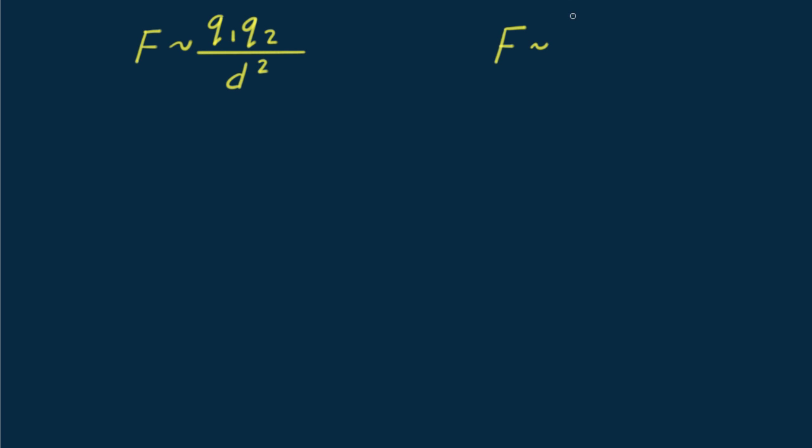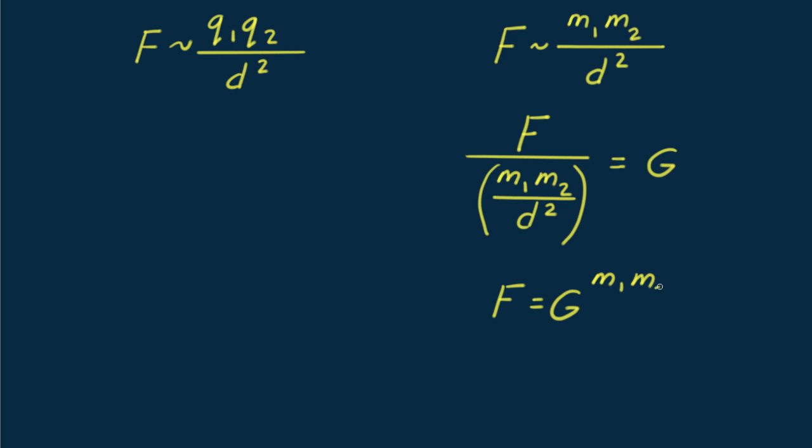Notice how similar this is to Newton's law of gravity. Recall that when we divide gravitational force F by the quantity m1, m2 divided by distance square, we get G, the universal gravitational constant. Then the proportion can be written as the exact equation. Force equals G times m1 and m2 divided by distance squared.